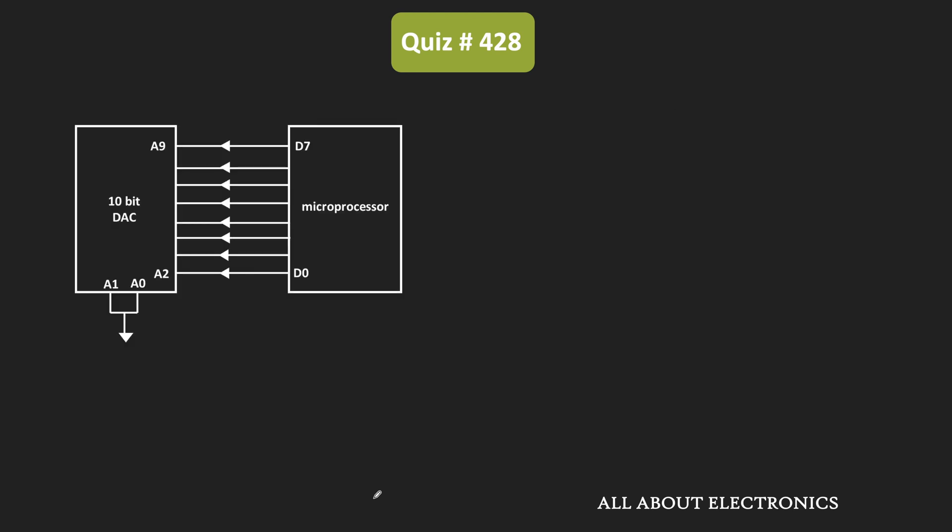The first set of data which is being sent through this data line is equal to 10101010. Then, the new set of data which is applied to the DAC is equal to 10101100. With the help of this data line, these 8 bits of data are applied to the DAC.